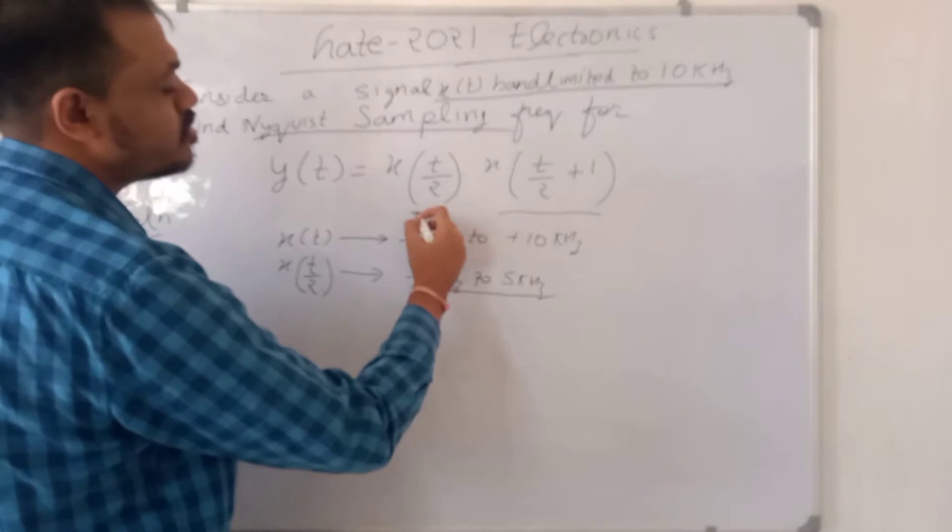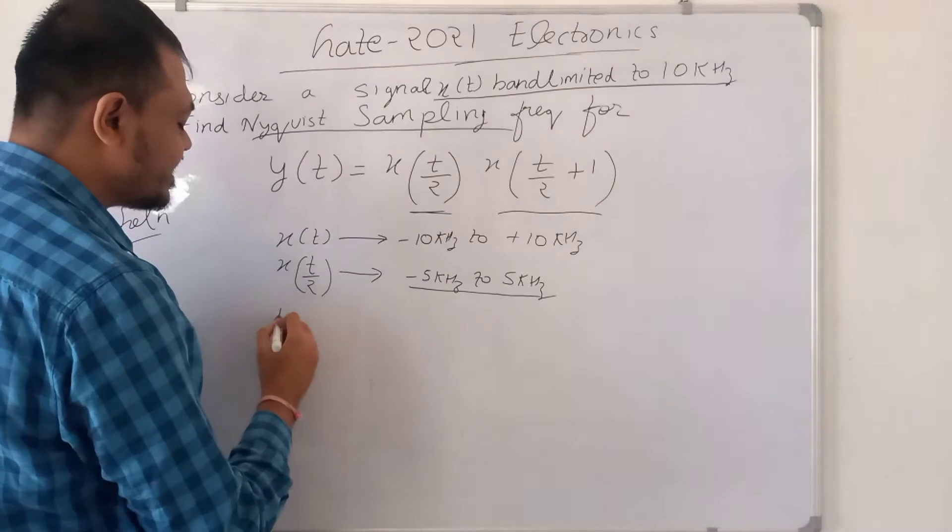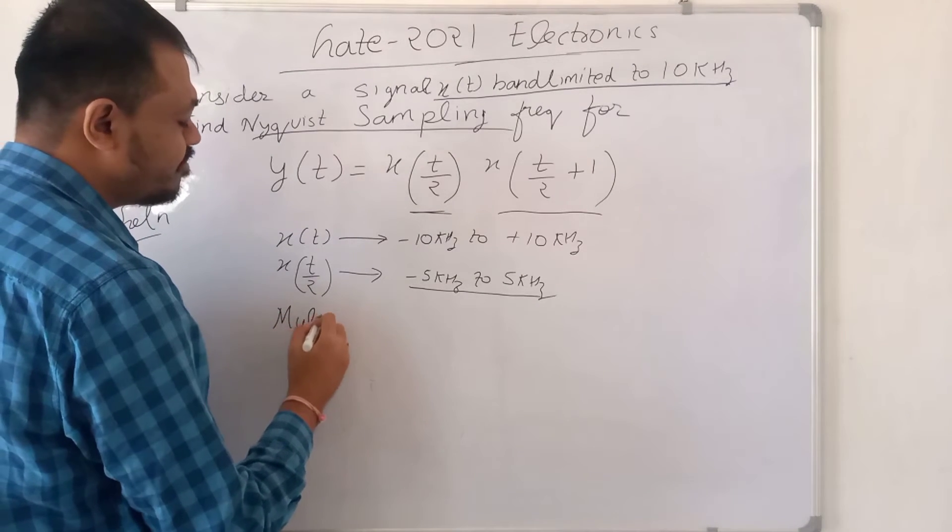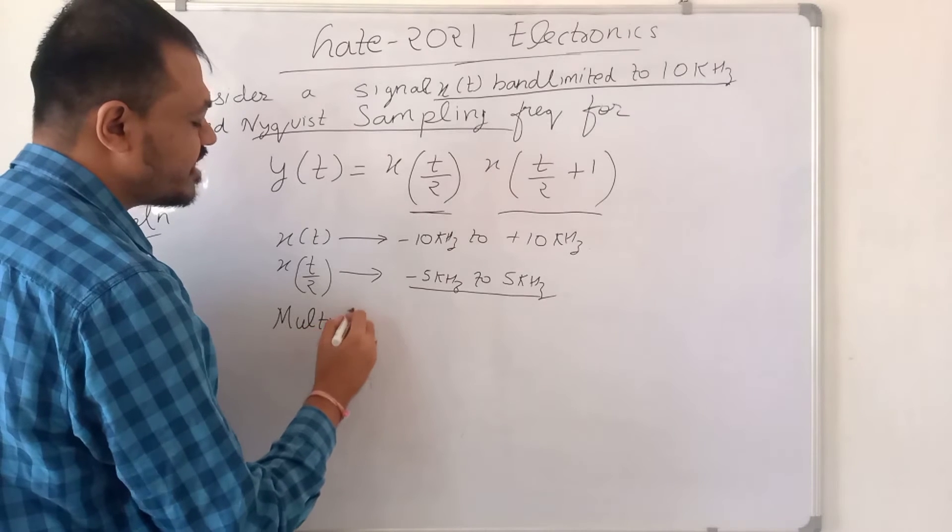So when we multiply these two in time domain, multiplication in time domain will simply result in convolution in frequency domain.